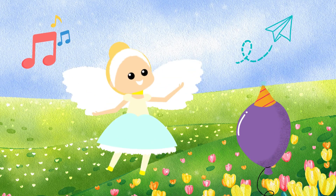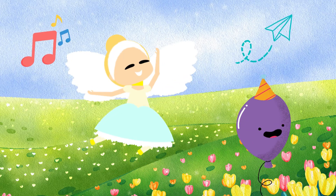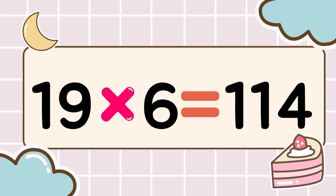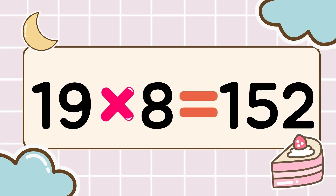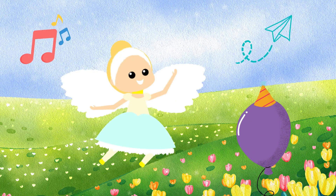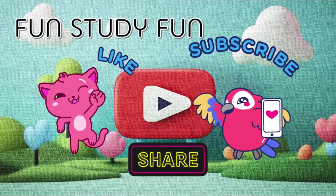Awesome, you did it perfectly so far! Multiplication mode stays on, let's go to the next level! 19 times 6 is 114, 19 times 7 is 133, 19 times 8 is 152, 19 times 9 is 171. Learning times tables is so fun. We are fun, study fun!